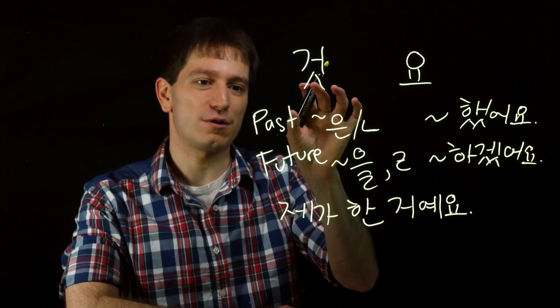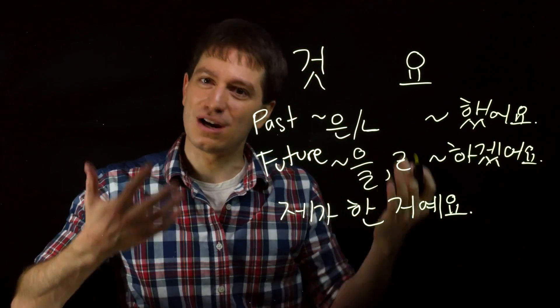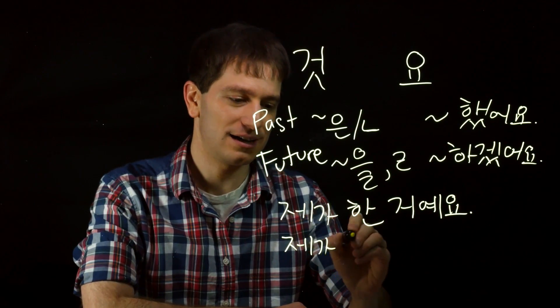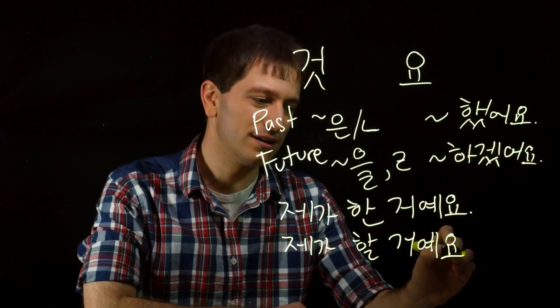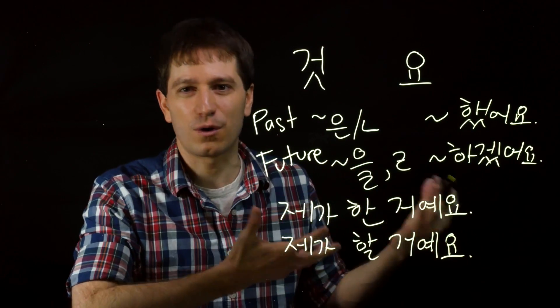So there are two forms for the past tense as well as two forms for the future tense and two forms for the present tense. And another example would be 제가 할 거예요, I will do it, versus 제가 하겠습니다, or 하겠어요, or whatever form that you're using there.